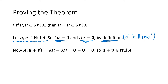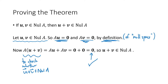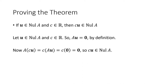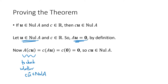To check whether u + v is in the null space, we multiply our matrix by that vector and see whether we get zero. Using our algebraic rules, we do get zero, so u + v is in the null space. Similarly, to check that if u is in the null space and c is a scalar, then c times u is in the null space: A times u equals zero, and multiplying by c, using our algebraic rules, we again get zero. So c times u is in the null space.